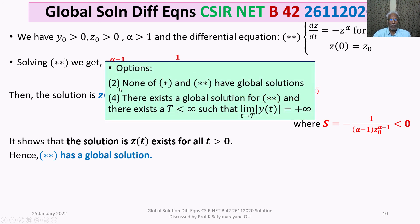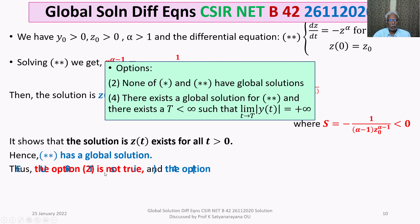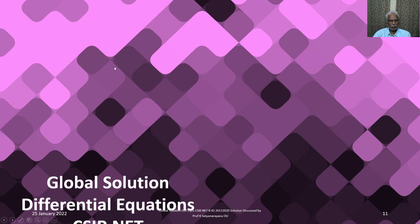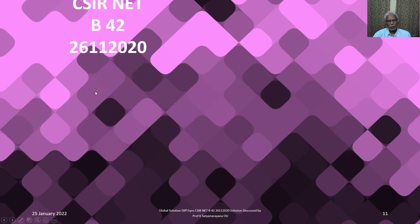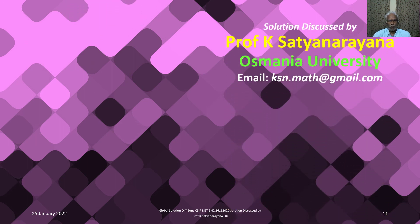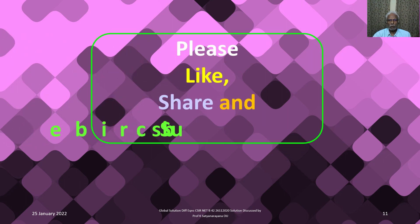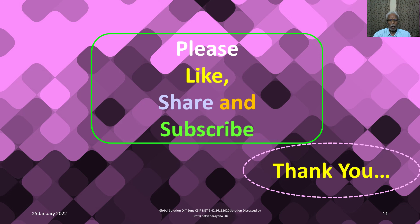Looking back at the options: since (**) has a global solution, option 2 (which says neither has a global solution) is not true. Option 4 is true, because (**) has a global solution and we already showed there exists a finite capital T such that limit as t → T of |y(t)| = +∞. Our final answer is option 4. That completes the discussion of global solutions for these two differential equations.